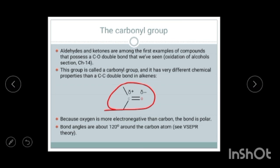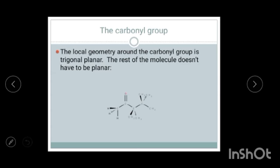If we check this carbonyl bond, it is polar in nature because there is a high polarity difference between oxygen and carbon. So there is a partial polar charge between carbon and oxygen. Here you can also see the geometry of the carbonyl group.